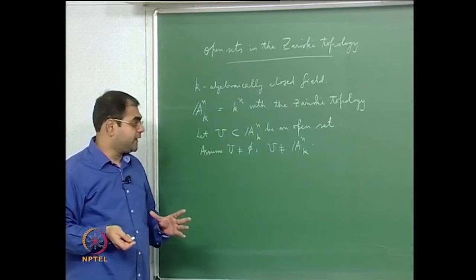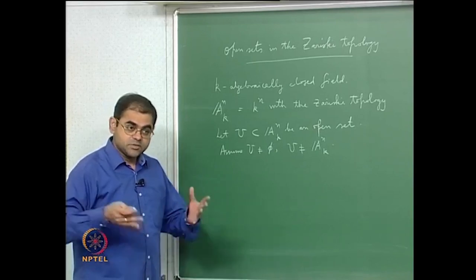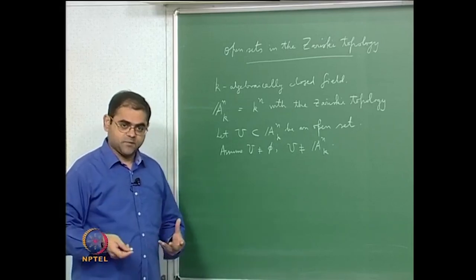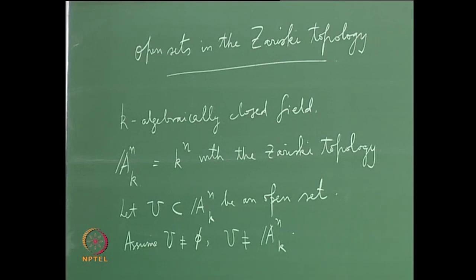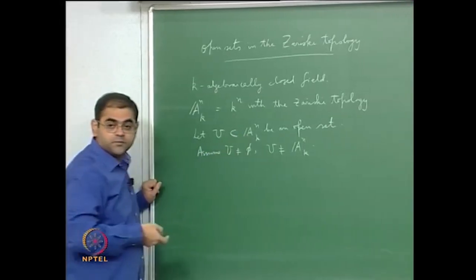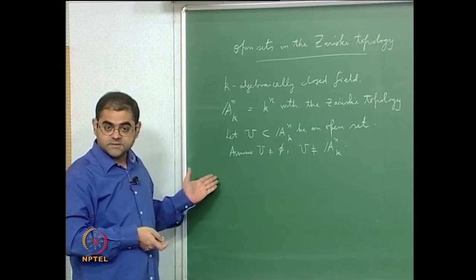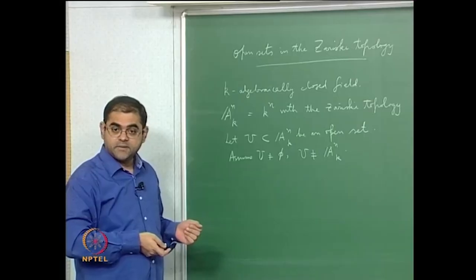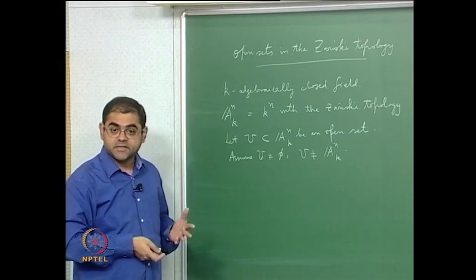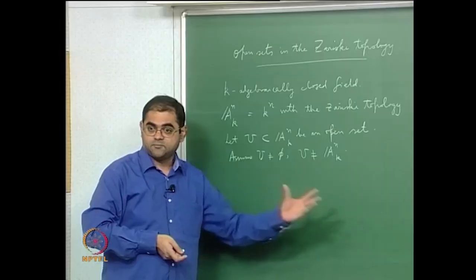A^n corresponds to the zero ideal, which is prime; therefore it is irreducible. We proved that a closed subset in A^n is irreducible if and only if the ideal it corresponds to — the ideal of functions vanishing on that closed subset — is actually a prime ideal. This is the translation of irreducibility, a geometric property, into the ring-theoretic property of primeness in the polynomial ring. So A^n is irreducible, and therefore any non-empty open set is both irreducible and dense.